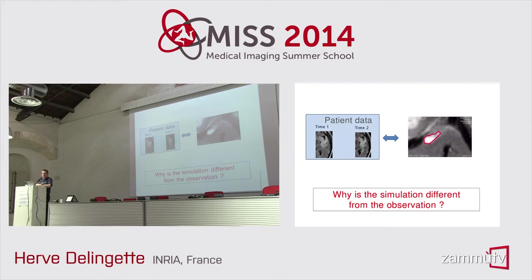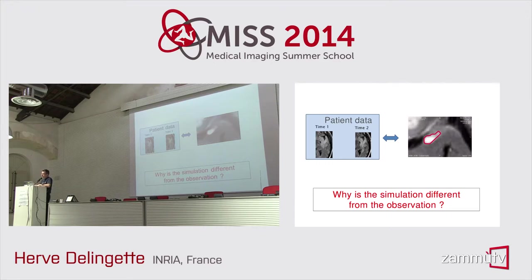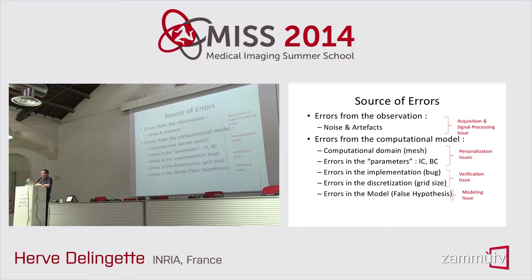Another source of errors is the model itself. The model is based on the hypotheses you make, and those hypotheses may be wrong. This is what I call a model error. There are also errors of implementation — bugs — and you should also consider the sources of errors systematically. So I will switch to the slide that lists the different sources of errors.